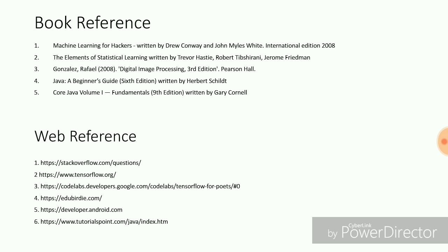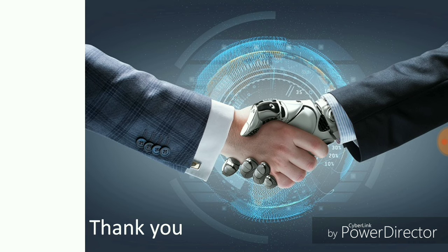These are the references for our final year project: Machine Learning for Hackers by Conway and John Miles White, international edition 2018; Java for Beginners; The Elements of Statistical Learning; and Java Core Volume. Web references include stackoverflow.com, www.tensorflow.org, code labs, developer.android.com, and tutorial points for Java. Thank you.